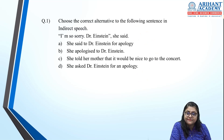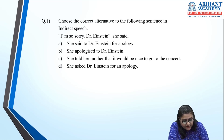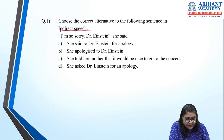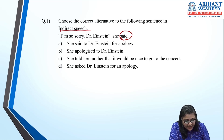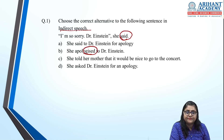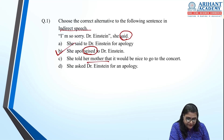Let's apply the rules in MCQs. First: change to indirect speech — 'I'm so sorry, Dr. Einstein,' she said. My first attention is 'she said' — past tense, so I must change the tense. She apologized to Dr. Einstein is correct, because she is not 'saying' — she is expressing an apology.